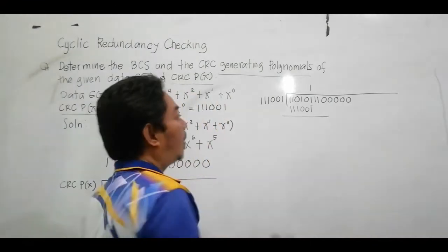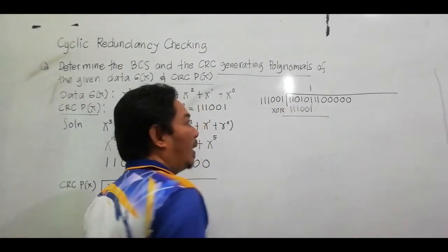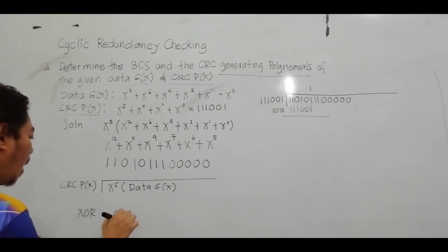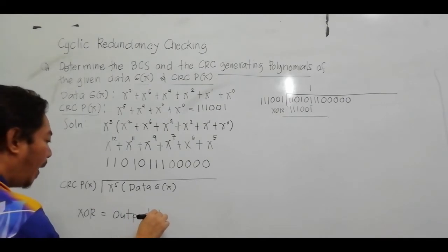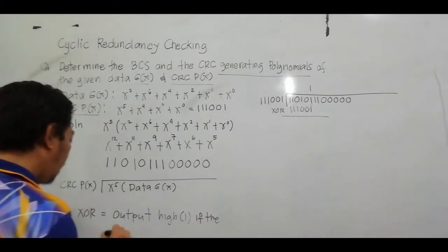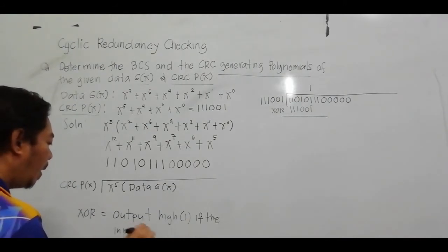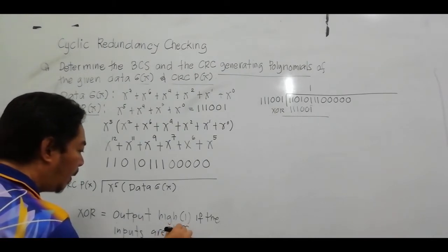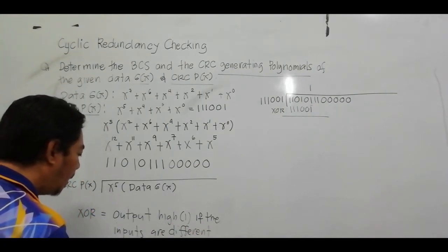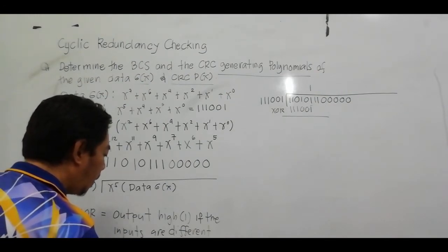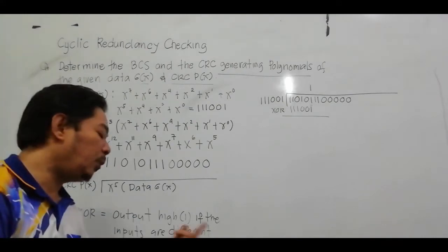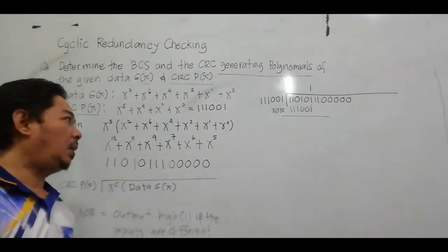We use the XOR gate. The XOR output is logic 1 if the inputs are different, and logic 0 if the inputs are the same. So meaning: if the inputs are different, the output is 1; if the inputs are the same, the output is 0.